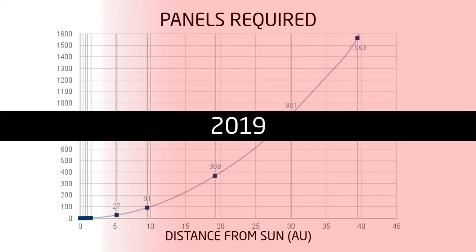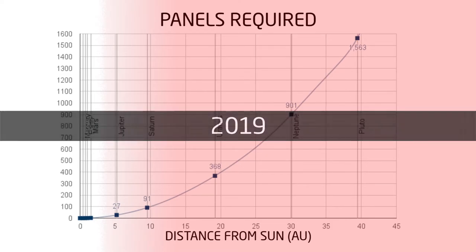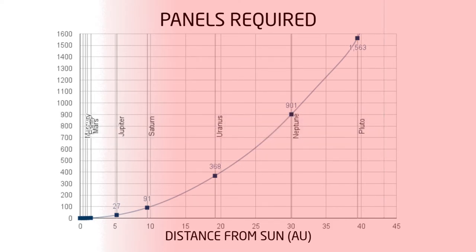And in 2019, New Horizons will start sucking up data once again as it passes by a Kuiper Belt object at a distance from the Sun of 43 astronomical units. Have a great day.